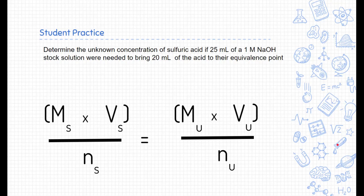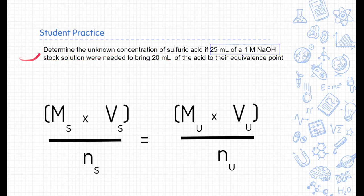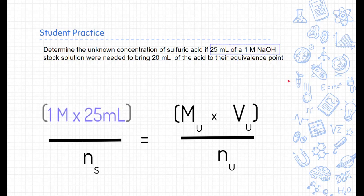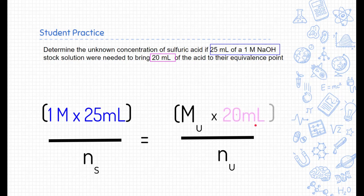Let's end with a student practice. Pause the video and see if you can solve this one yourself: determine the unknown concentration of sulfuric acid if 25 milliliters of a one molar sodium hydroxide stock solution were needed to bring 20 milliliters of the acid to their equivalence point. Did you figure it out? Let's work through it. Sodium hydroxide is our stock solution — 25 milliliters, one molar. We know the molarity, so we plug that into the stock solution side. The 20 milliliters of sulfuric acid goes into the unknown side.